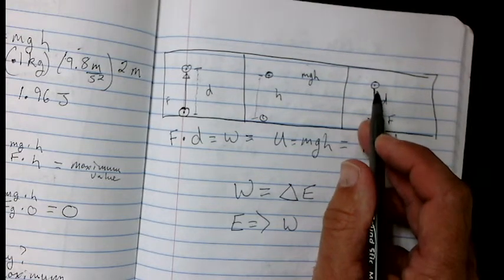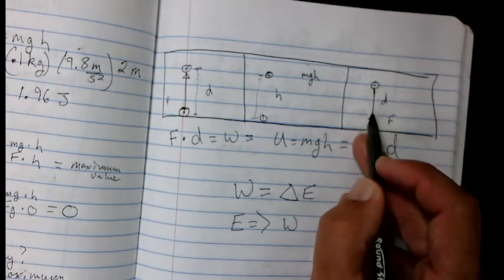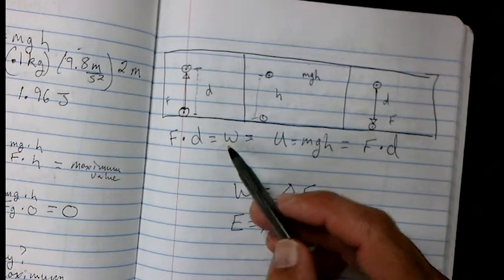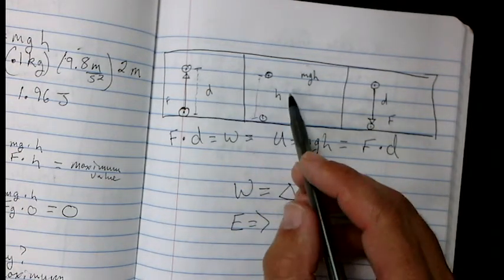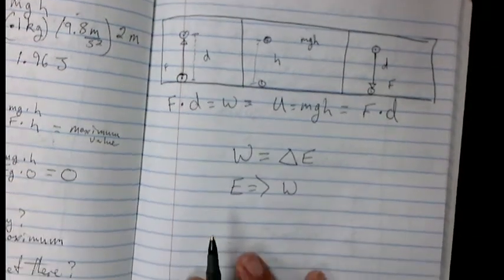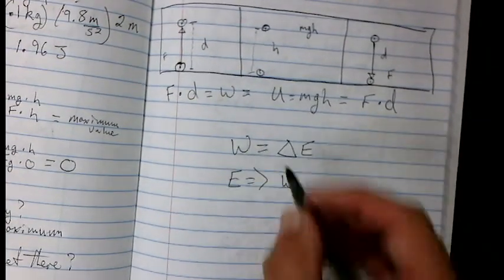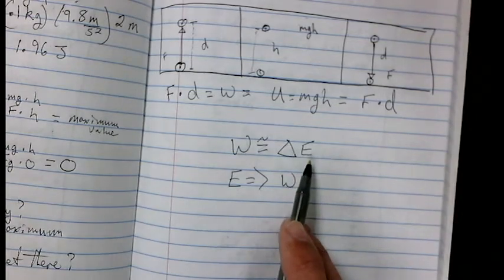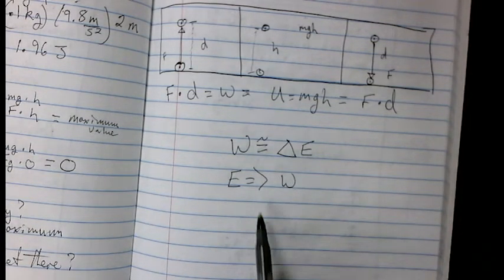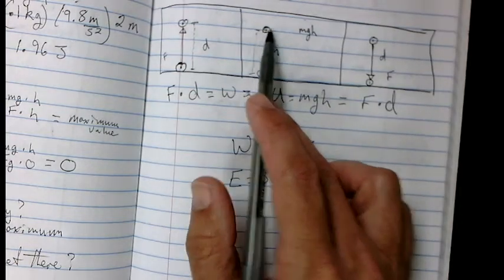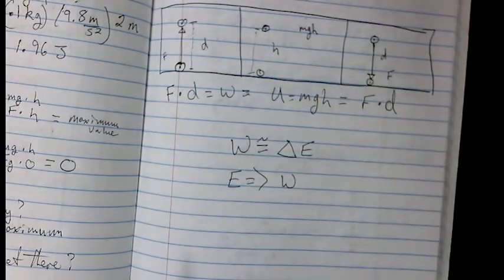We let go of the object, and now the force of gravity pulls the object down over a distance, and we get work again. But the value for these numbers, the value of the work done here, is equal to the potential energy here, which is equal to the work done here. So work is approximately equal to a change in energy. We could say it's exactly equal if we're talking in a pure case, but work is equal to the potential energy. Energy causes work to be done. So when we release energy, work is done on the object involved.